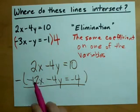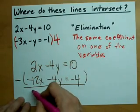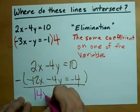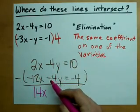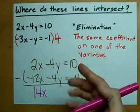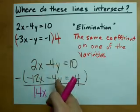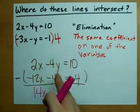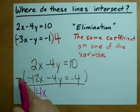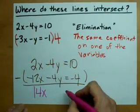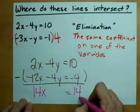Keep your x's together. 2 minus negative 12 gives me 14. Negative 4 minus negative 4 gives me 0. That's the point of elimination. I now have zero y's to deal with. I eliminated y by giving them the same coefficient, and then subtracting one from the other. And here I have 10 minus negative 4. That's 14.